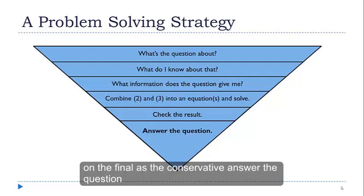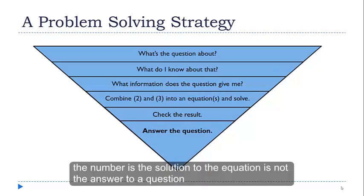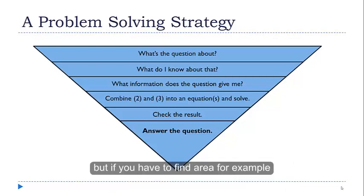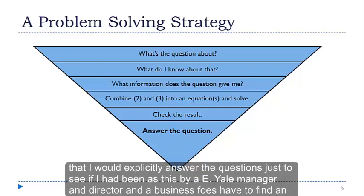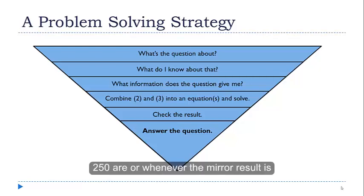And then finally, the last step - be sure that you've answered the question. A number is the solution to the equation. It's not the answer to a question. Whenever you're doing this kind of word problem, the last thing you should do is go back and look at the question. If you were asked to find an area, for example, my final answer would be the average is 250 or whatever the numeric result is.